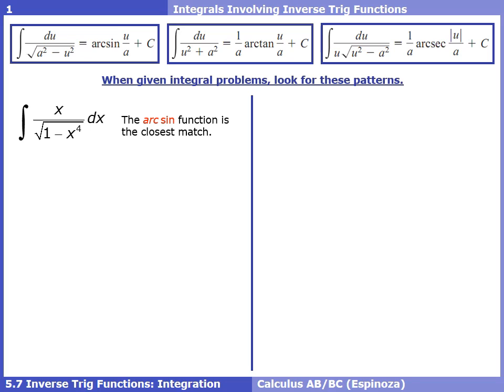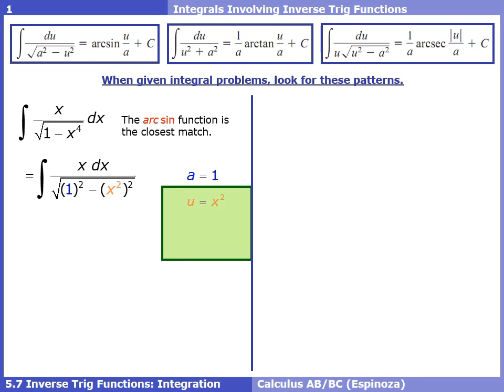Since it can't be simplified or solved with u-substitution, it falls into one of the three inverse trig possibilities, and it looks like the arcsine formula. The goal is to literally transform the problem into the formula. What we're looking for is to rewrite what's under the square root as a number squared minus a u squared. We can rewrite 1 as 1 squared, and x to the fourth as x squared, all squared. So a is 1 and u is x squared.